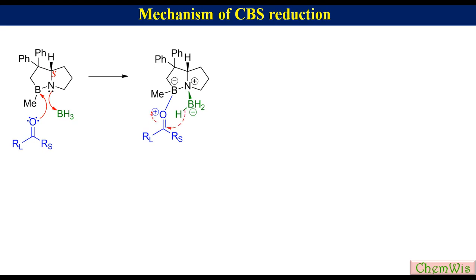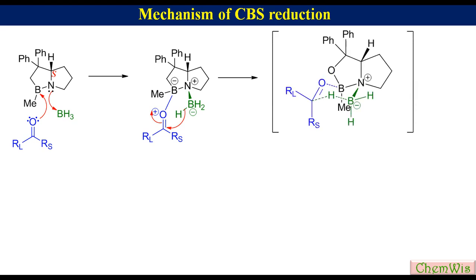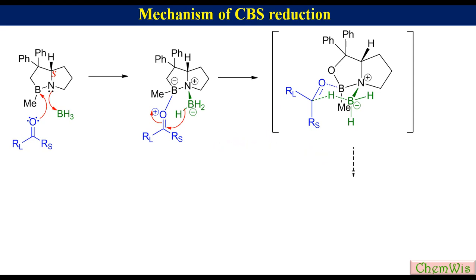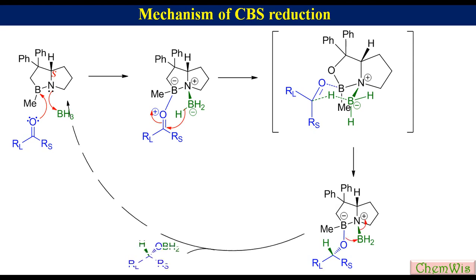The hydride transfer proceeds through a six-membered cyclic transition state, where the larger group of the ketone prefers to occupy the pseudo-equatorial position, while the smaller group prefers to occupy the pseudo-axial position, to make this transition state more stable. The hydride transfer generates another adduct, which after intramolecular exchange reaction, eliminates chiral alkoxyborane and regenerates the CBS catalyst.